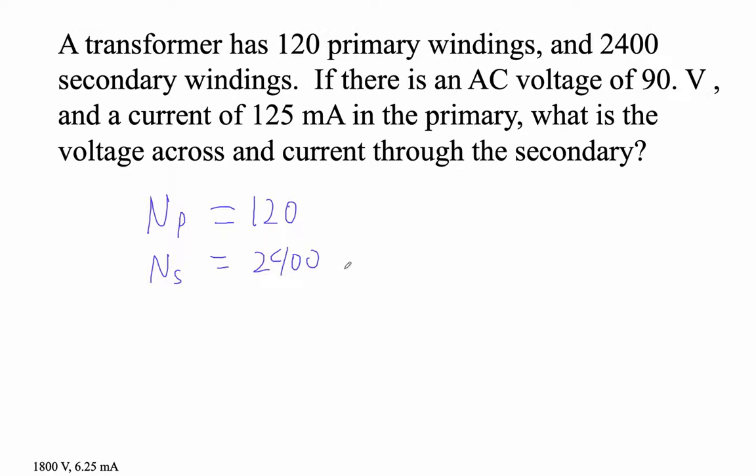There's an AC voltage of 90 volts and a current in the primary. What is the voltage and current in the secondary? So a primary, the voltage is 90 volts, and the current in the primary is 125 milliamps, so 0.125 amps. And then we got to figure out what is our voltage secondary, what is our current in the secondary.